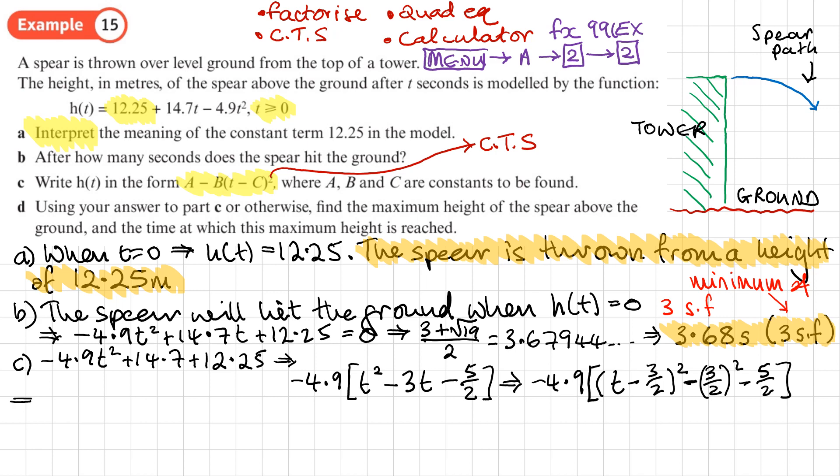So from here what I can do is actually simplify what I've got in brackets. So that's going to be (t - 3/2)², and then -9/4 - 5/2, and that's -19/4. Now it's not quite in the form that they want. I actually need to expand the brackets to get it exactly in that form. So that's going to be -4.9(t - 3/2)², and then I need to do -19/4 times by -4.9, and that gives 931/40. Let's see what that looks like as a decimal - oh that's not too bad, 23.275. Because it's a negative times a negative it's a positive, so +23.275.